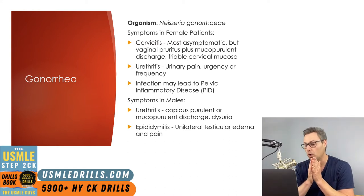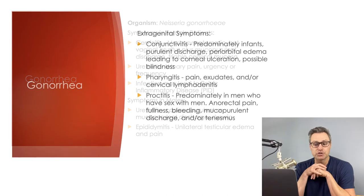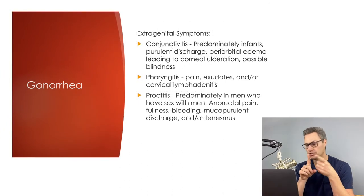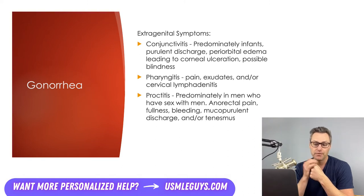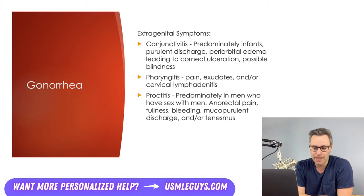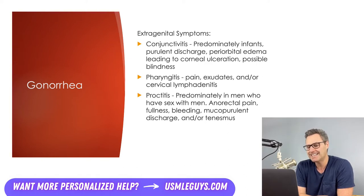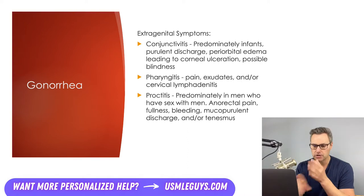In males, urethritis can present with copious purulent or mucopurulent discharge with dysuria and epididymitis, which presents with unilateral testicular edema and pain. Extra-genital symptoms in both sexes include conjunctivitis — predominantly seen in infants delivered vaginally from a mother with active gonorrhea — presenting as purulent discharge with periorbital edema, which can lead to corneal ulcerations, perforation, and possibly blindness. Pharyngitis can also occur, presenting with pain, exudates, and/or cervical lymphadenitis. Proctitis, predominantly seen in men who have sex with men, may manifest as anorectal pain, fullness, bleeding, mucopurulent discharge, and/or tenesmus.